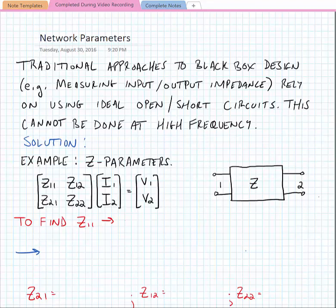Traditional approaches such as impedance parameters or z-parameters rely on being able to use an ideal open or short circuit, and this can't be done at high frequency.